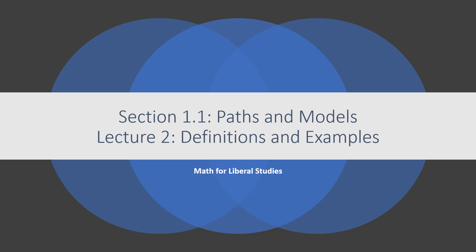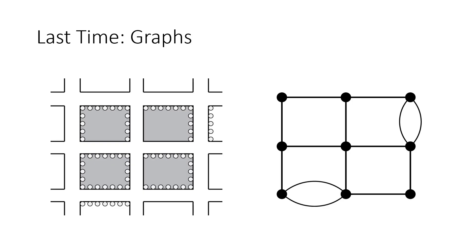This is the second video talking about section 1.1, paths and models. In this video we're going to talk about some definitions and examples. Last time we looked at a real-world situation — walking around a neighborhood to check various parking meters — and we represented this by a graph. This picture on the right-hand side is what mathematicians call a graph, maybe not similar to the kinds of graphs you might be used to from an algebra class.